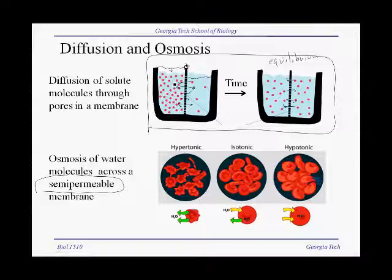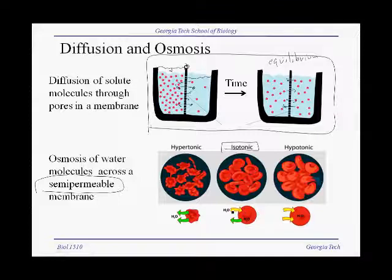We can use the principle of osmosis to predict what happens to living cells in different environments. In our bodies, our cells are in what we call an isotonic situation. That means that the solute concentration outside of our cells is equivalent to the solute concentration inside our cells. In that case, the rate of water coming into the cell is balanced by the rate of water coming out of the cell, and our cells maintain a stable volume.